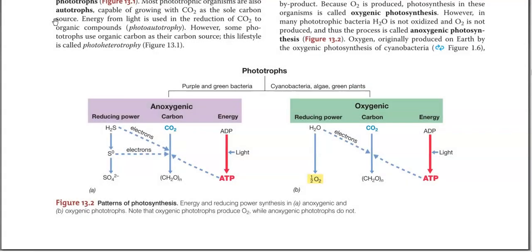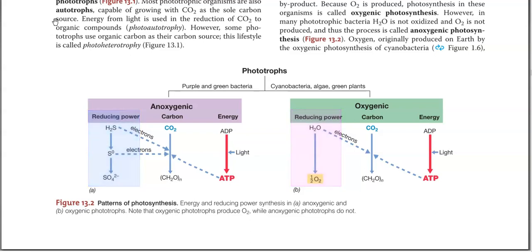The difference between these two groups exists in the utilization of the reducing power, whereas the other two processes — carbon fixation and energy generation — are the same for both groups of organisms. In the anoxygenic group of photosynthetic organisms, the electron is obtained from reduced molecules such as hydrogen sulfide.